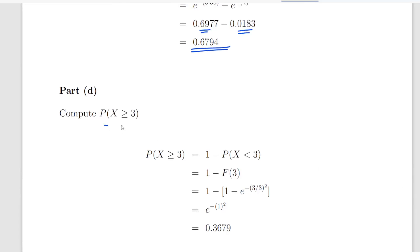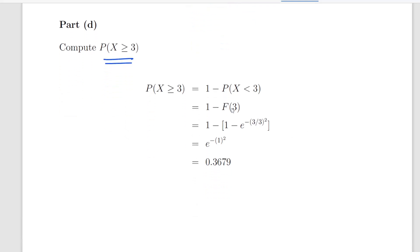Finally, we get the survival function of 3, which is 1 minus the CDF of 3. The CDF is 1 minus the exponential of minus 3 divided by 3, squared, which is 1 squared. With the survival function, the ones cancel out, leaving us with the exponential of minus 1 squared, which works out to be 0.3679.